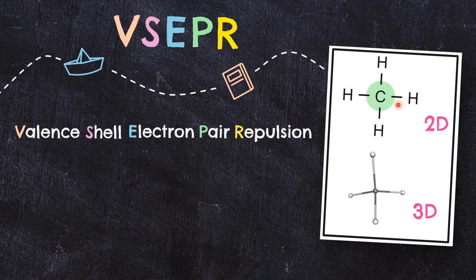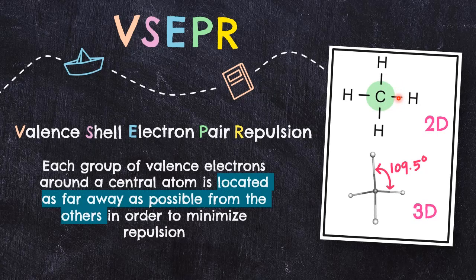Atoms are surrounded by a cloud of negatively charged electrons. When we have atoms in a molecule, these electron clouds will repel each other. Because of these repulsions, a molecule will automatically adopt a particular geometry to allow the atoms to be as far away from each other as possible, to keep the energy at its lowest. This is how we will predict the molecular shape.